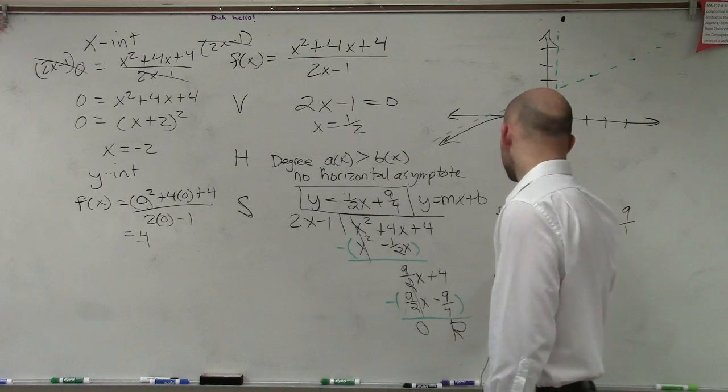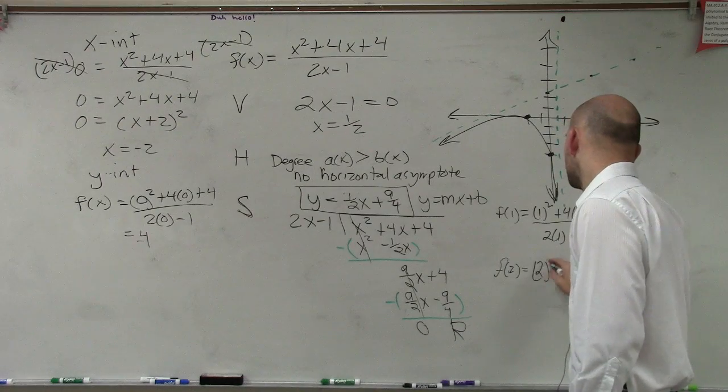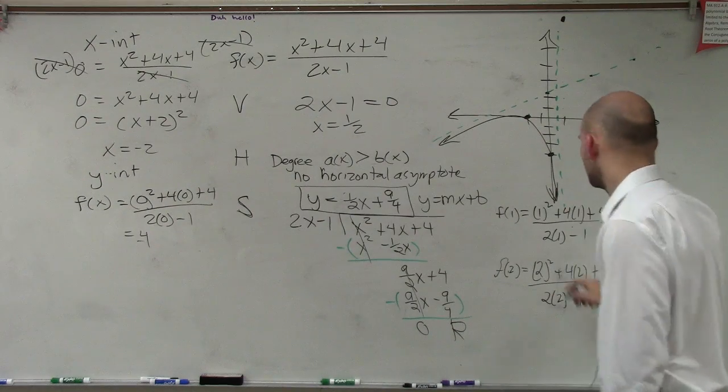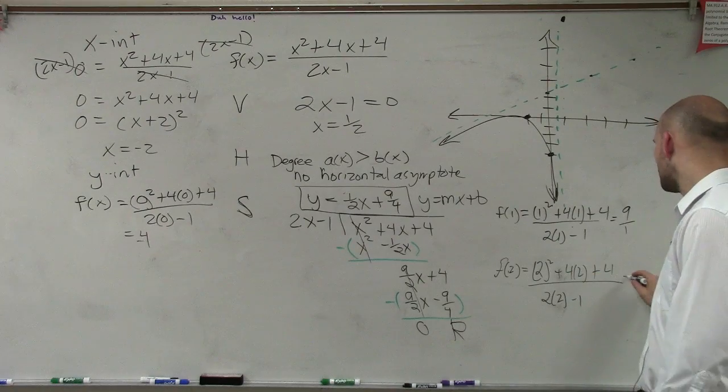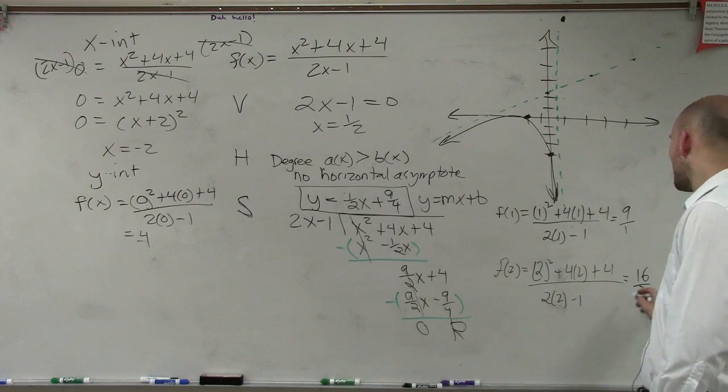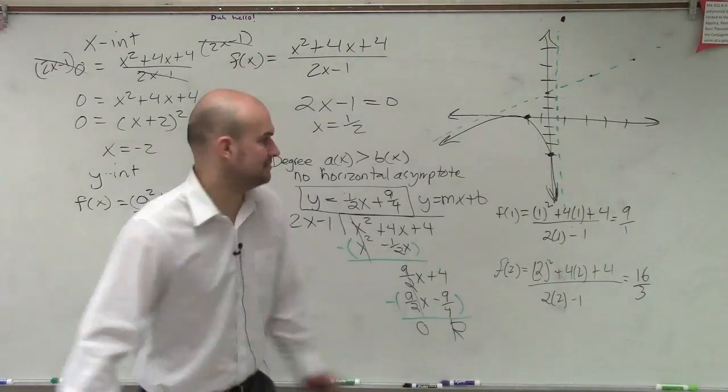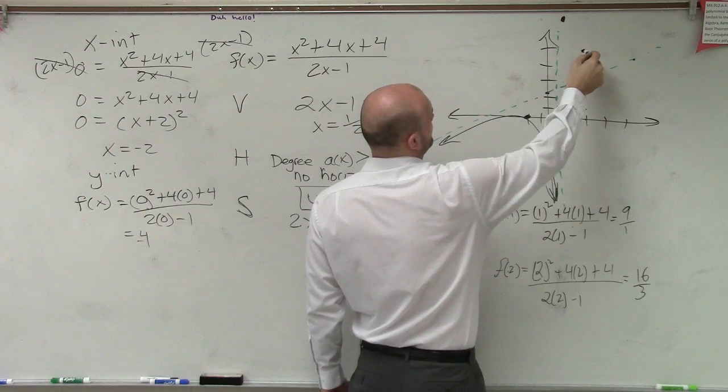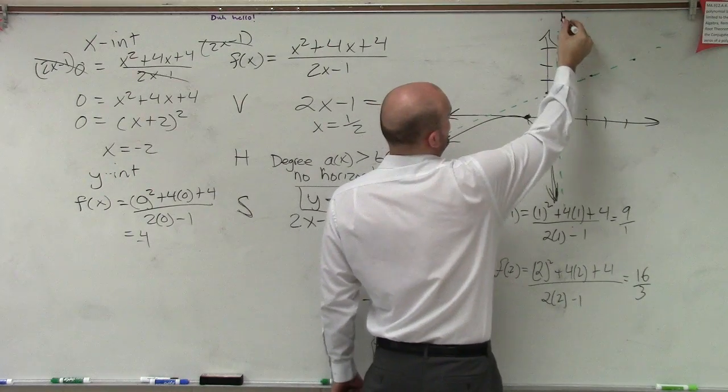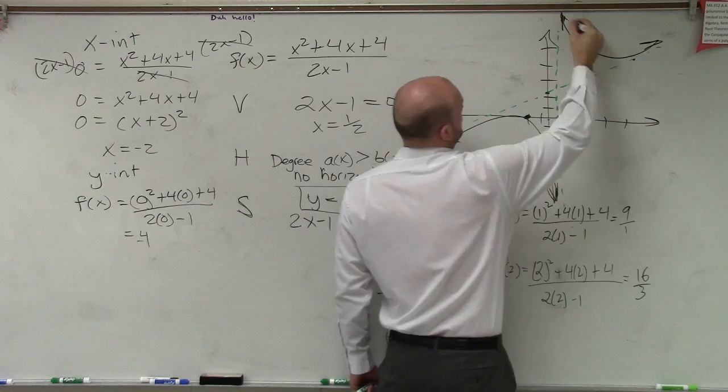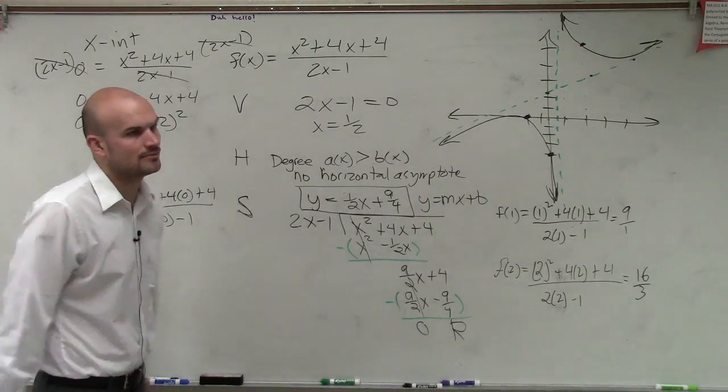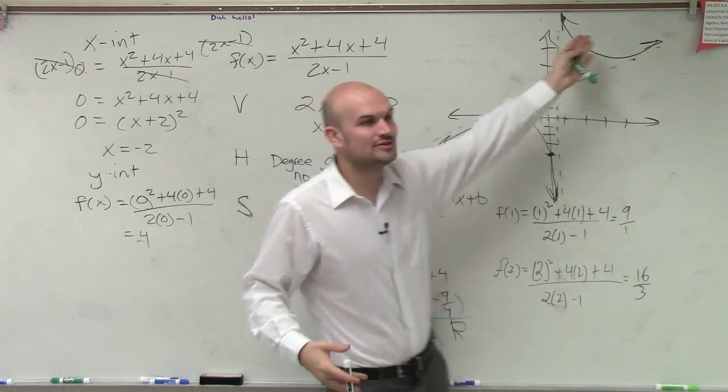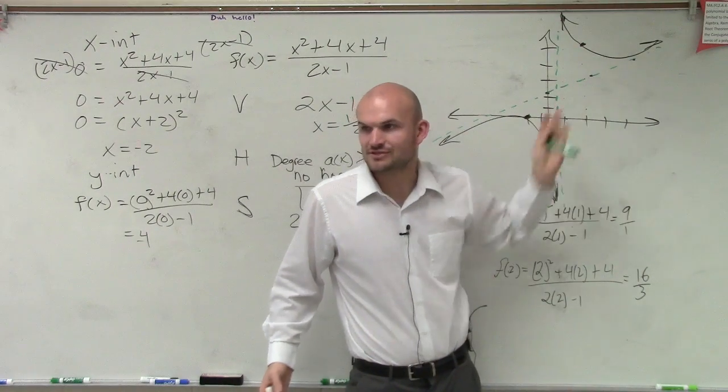And then let's do f of 2. So I do 2 squared plus 4 times 2 plus 4 divided by 2 times 2 minus 1. So this is 4 plus 8, which is 12, plus 4 equals 16. 16 divided by 3 is going to be 5 and 1 third. So we go over 2, and we go up 5 and 1 third. 1, 2, 3, 4, 5, and 1 third. So what you guys are going to see is the graph is going to be going right there. I know my graph's not perfect. You guys are going to have grid lines. I don't have grid lines, but you can see that these are kind of the exact opposite or the same graphs, just in different parts.